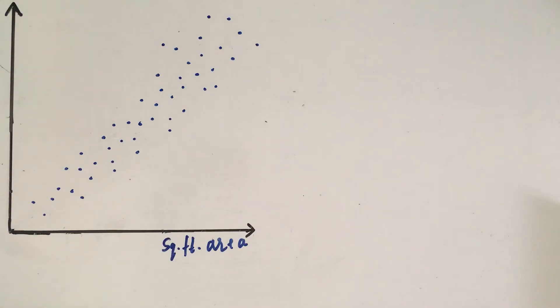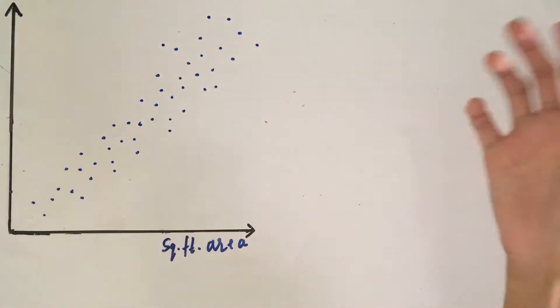In the last video, we saw what is linear regression. A linear regression is a model that we use when the predictions are in the form of continuous numbers. And the way we make the prediction is by drawing an approximate straight line that fits our data set.